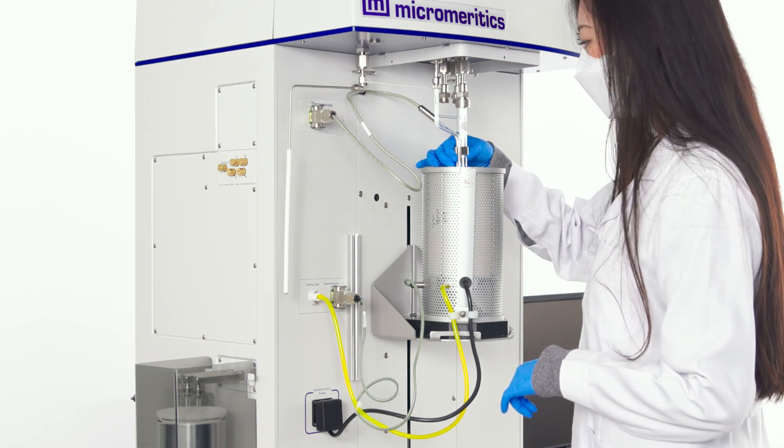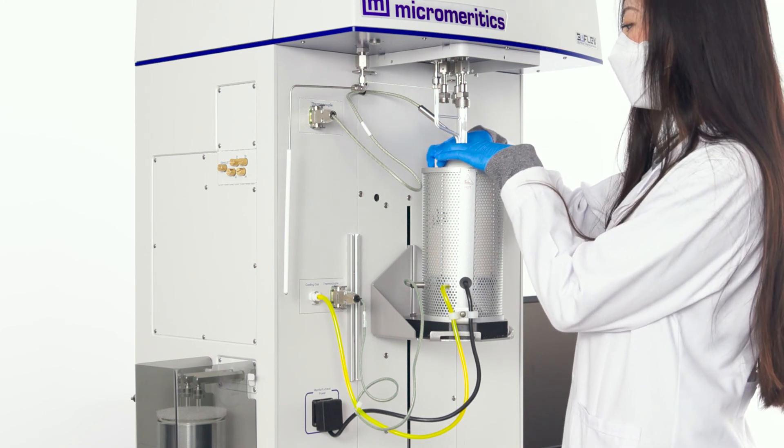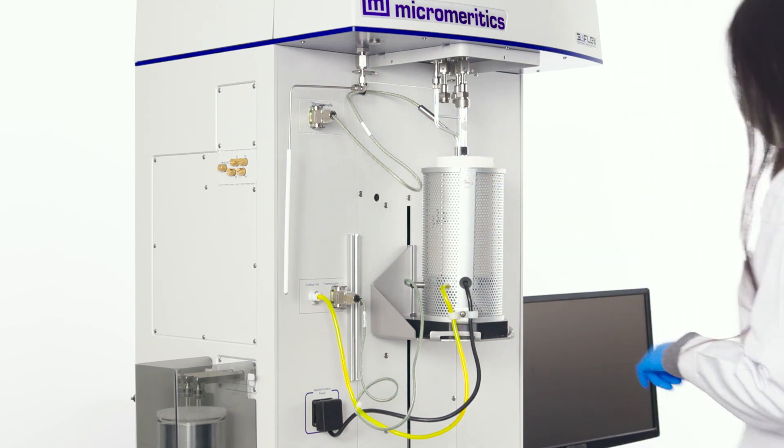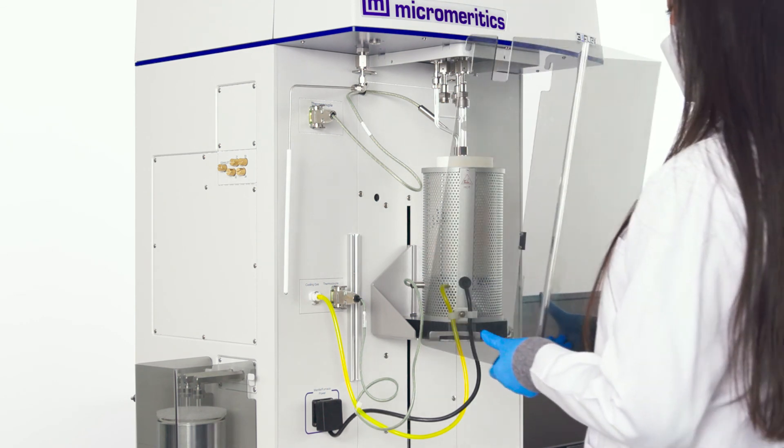Place the insulation discs on top of the furnace. Place the shield over the sample tube and the furnace to improve temperature stability.